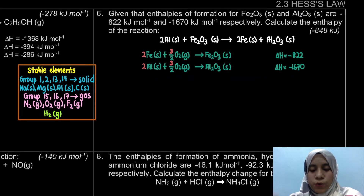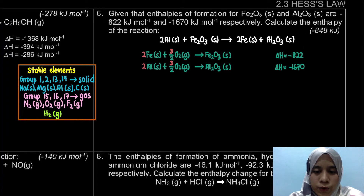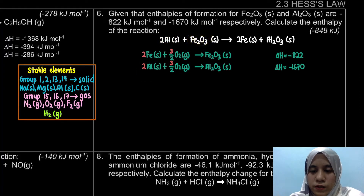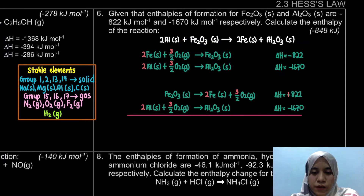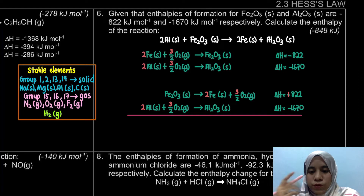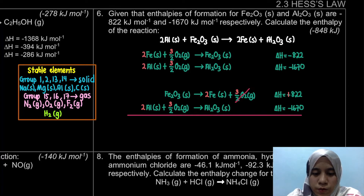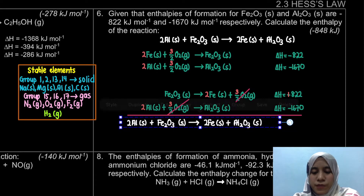Write down the equations with their enthalpy values. To get the target reaction, check the positions: 2Al is on the reactant side and Fe2O3 is on the reactant side in the target equation. But from the Fe2O3 formation equation, iron is on the product side, so we must flip that equation and change the sign. Once all equations are written and flipped as needed, we simplify by cancelling the oxygen terms. This gives a straightforward result: delta H equals negative 848 kJ.